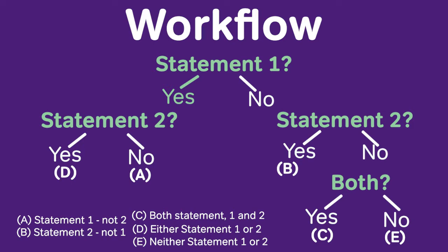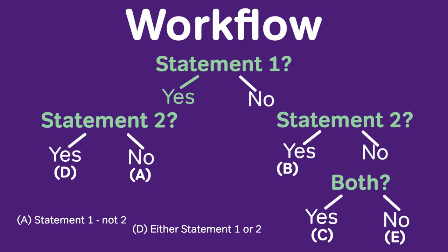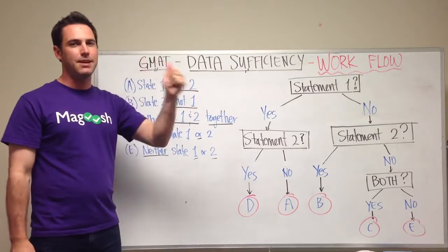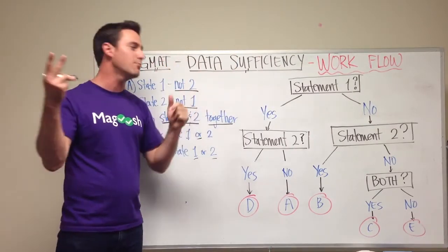Then you still need to evaluate statement 2 and you can eliminate answer choices B, C, and E. So if statement 1 does help, then you can eliminate B, C, and E. That's awesome. You have two more to choose from.